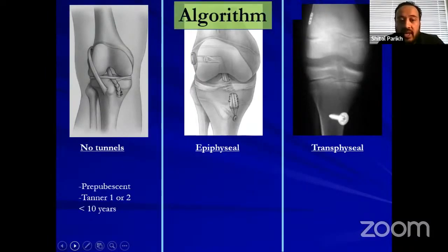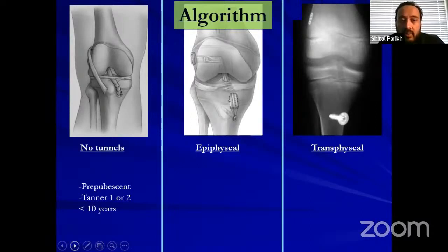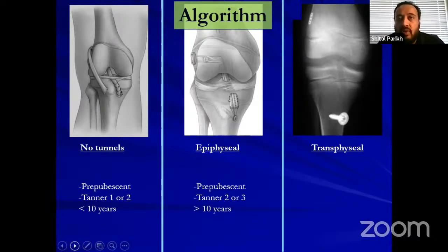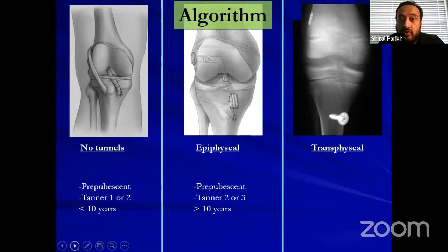My algorithm uses all three techniques based on the patient's age and remaining growth. For a prepubescent patient — typically a nine or ten-year-old boy, Tanner stage one or two — I use the McKinley-Coker technique with no tunnels, using the iliotibial band. For epiphyseal reconstruction, I use it when the patient still has two years of growth remaining but is more advanced in maturity, typically greater than 10 years of age. Transphysial is for pubescent patients with no more than two years of growth remaining — Tanner stage four or five, typically adolescent, more than 13 years of age.